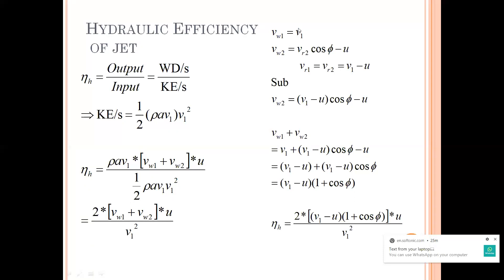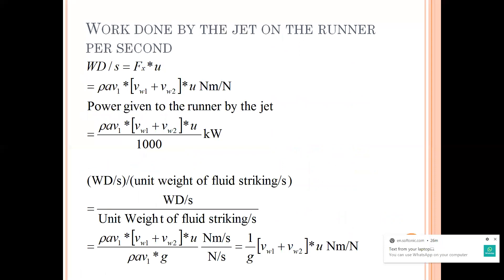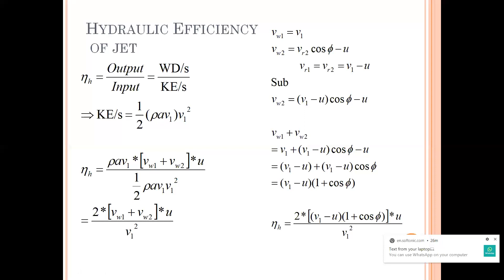Adding these terms and taking -u to the other side: v1 - u + (v1 - u) * cos(phi). I can take (v1 - u) as common, giving (v1 - u)(1 + cos(phi)). This I will substitute into my hydraulic efficiency equation, and also into my work done formula depending on what is asked. So substituting into eta_h: eta_h = 2 * (v1 - u)(1 + cos(phi)) * u / v1^2.